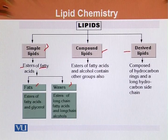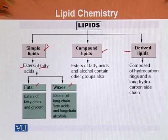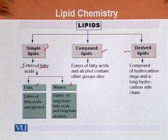Compound lipids are also esters of fatty acids and alcohols but containing other groups as well. These other groups include a phosphate group, a sulfate group, or other groups attached to them. Derived lipids are composed of hydrocarbon rings and long hydrocarbon side chains. In simple and compound lipids we had straight hydrocarbon chains, but here we have hydrocarbon rings with long hydrocarbon side chains attached to them.